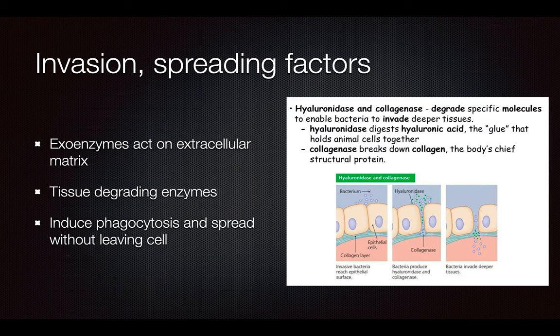Proteases are going to be surface-bound and secreted forms that target host immune factors in tissue, making it harder for the cell to produce these immune factors. They cleave the IgGs and inactivate the effector functions. They can also bind to the immunoglobulins via the Fc chains and immobilize them, canceling the immune signal. Exoenzymes work on the extracellular matrix — those are going to be hyaluronidase and collagenase, and they degrade certain tissues in order for the bacteria to enter.